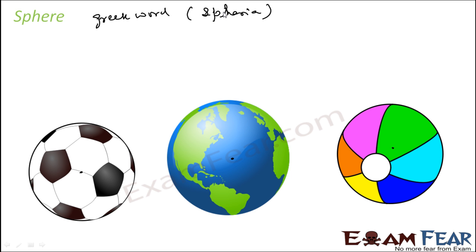Geometrically, a sphere is a three-dimensional object. It is the set of all points that are at the same distance R from a given point called the center in three-dimensional space. The same definition holds true for a circle as well, but for a circle we talk about two-dimensional space.